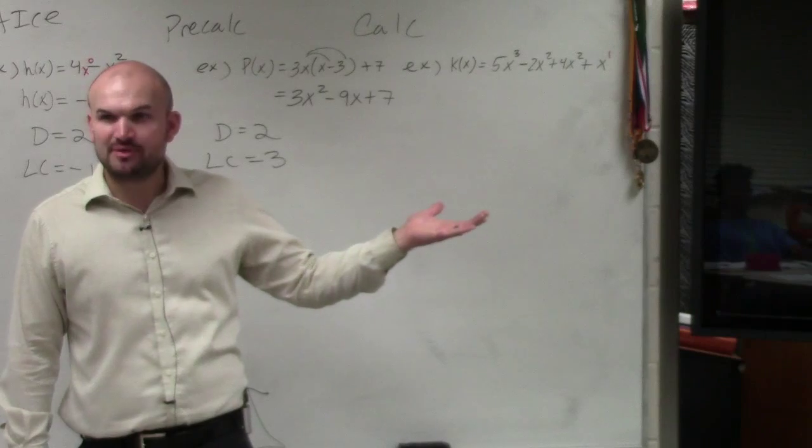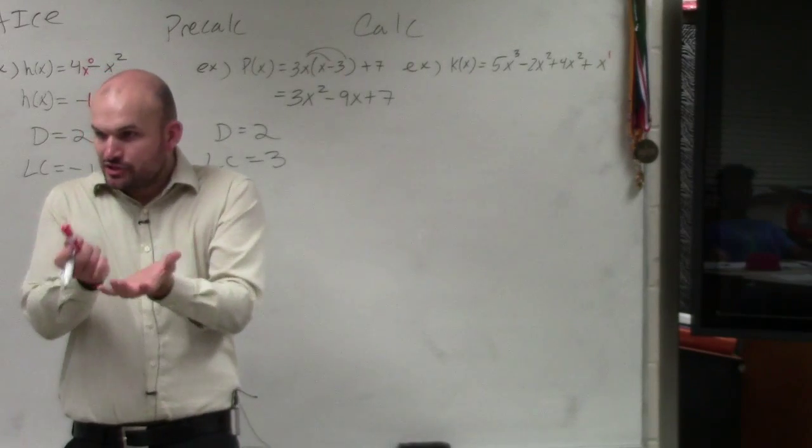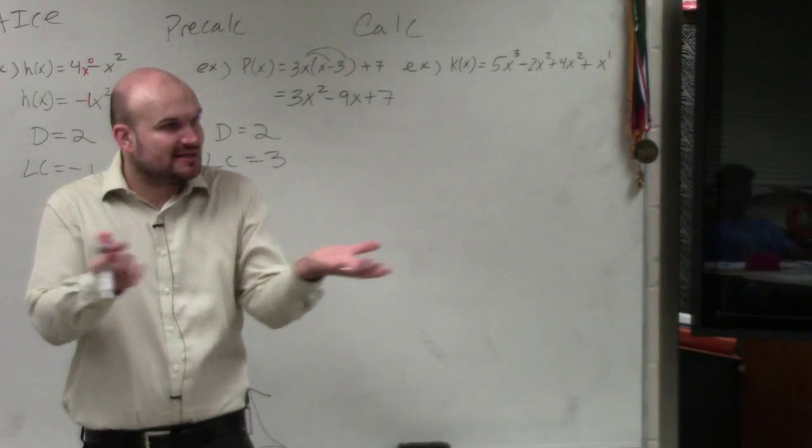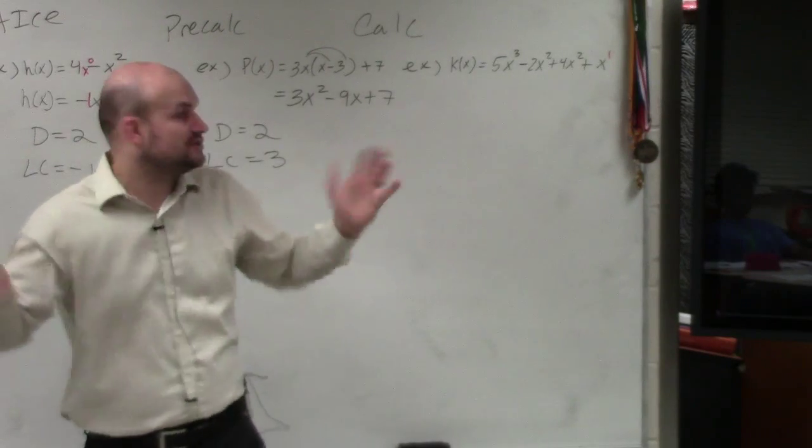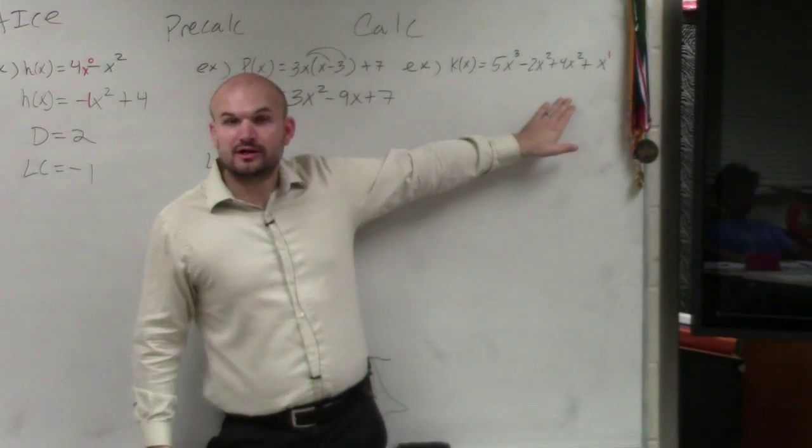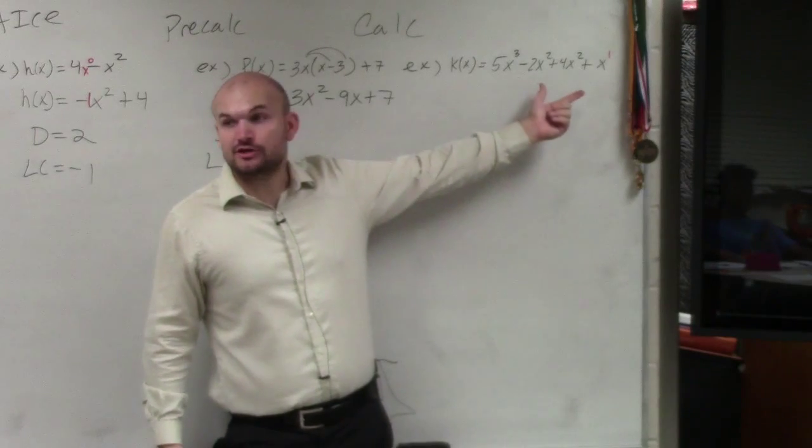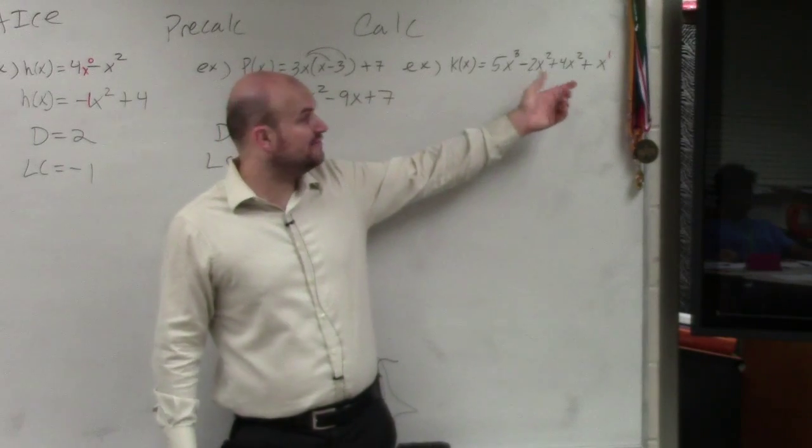Do you guys remember when we were doing this for complex numbers? Remember we added the i's, and we did variables first. What happens when you add your like terms? You keep your exponents the same, but you just add or combine your coefficients.